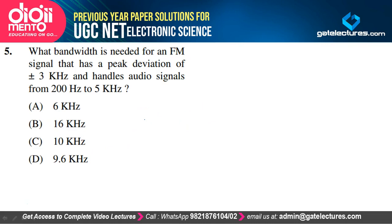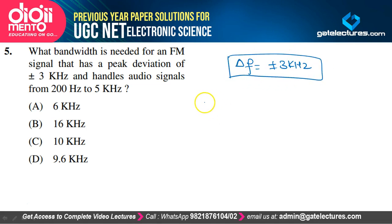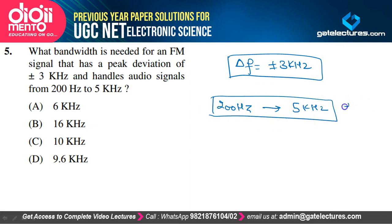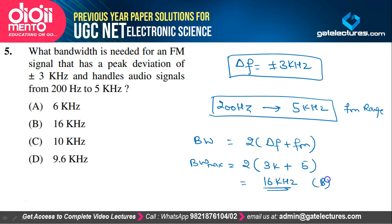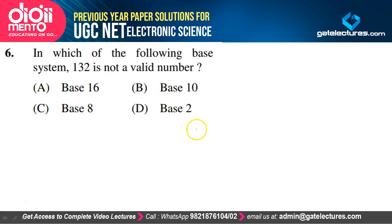What bandwidth is needed for an FM signal with a peak deviation of ±3 kHz that handles audio signals from 200 Hz to 5 kHz? Bandwidth = 2(Δf + fm) = 2(3 kHz + 5 kHz) = 16 kHz. So option B is the correct option.